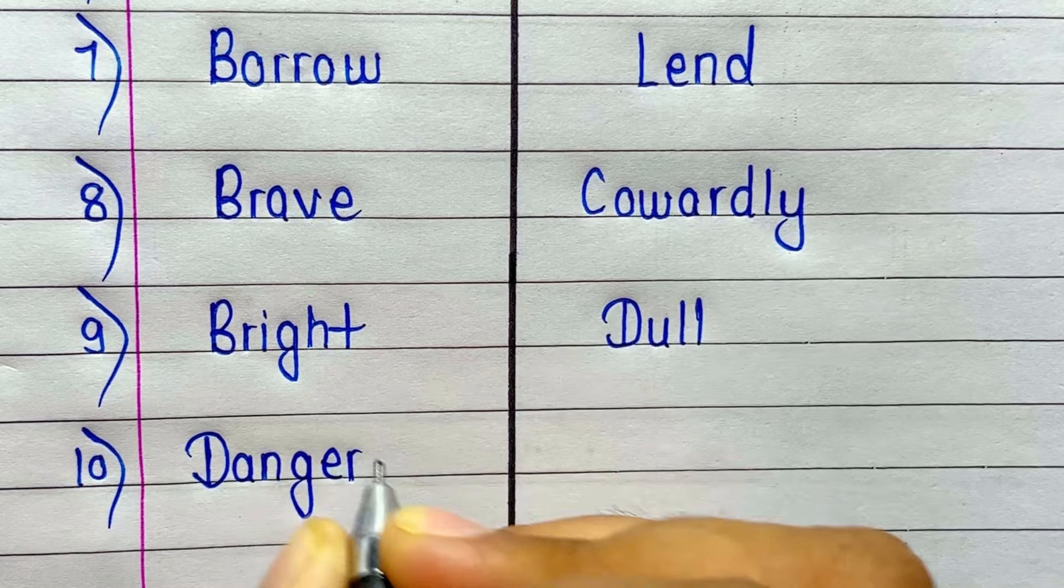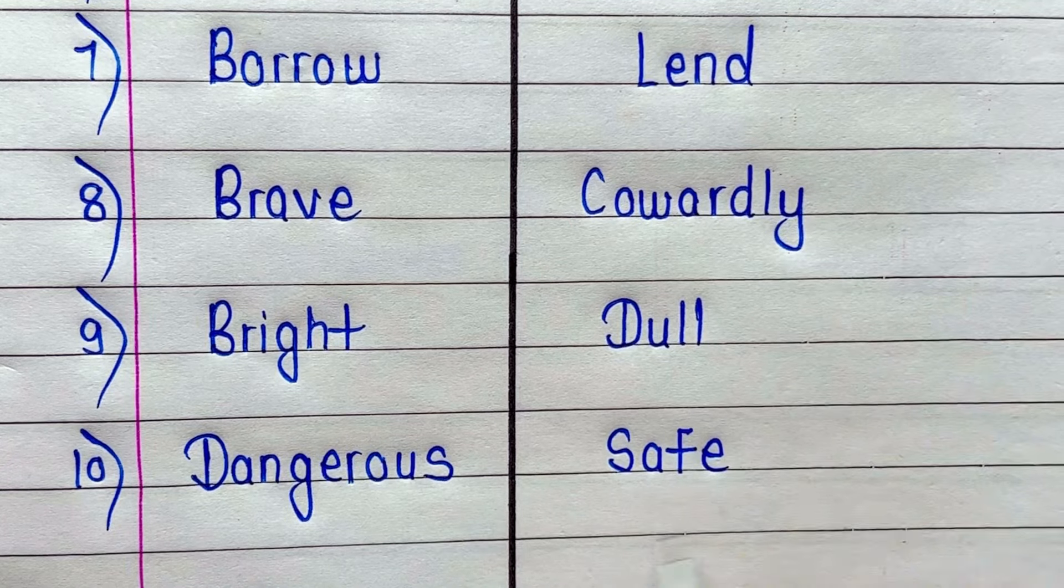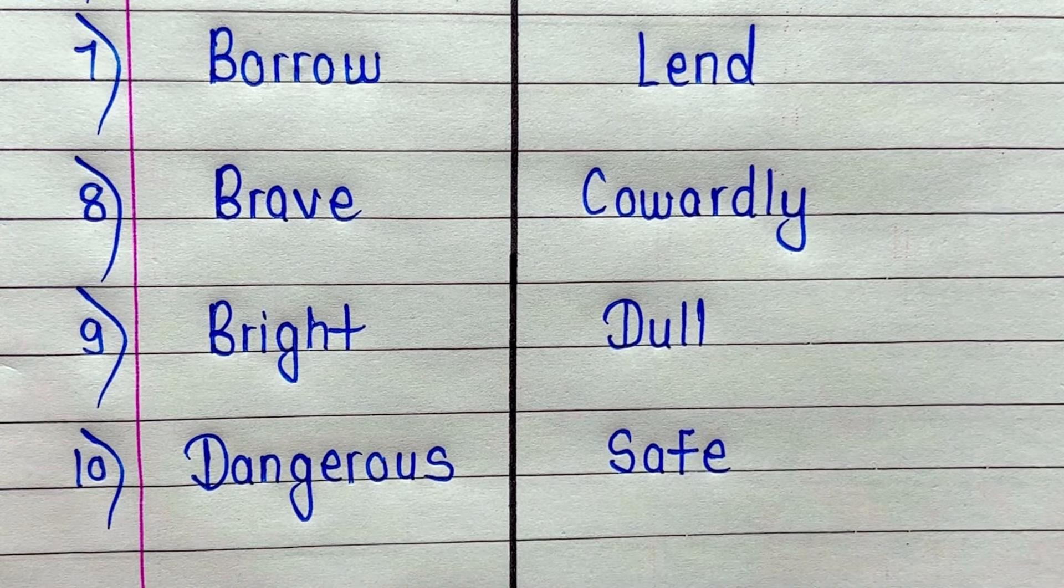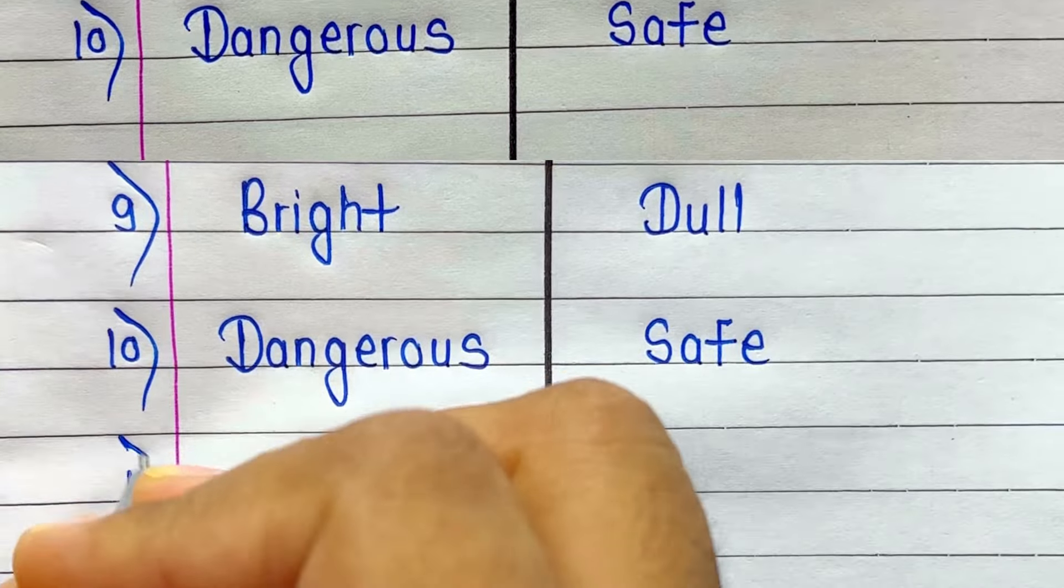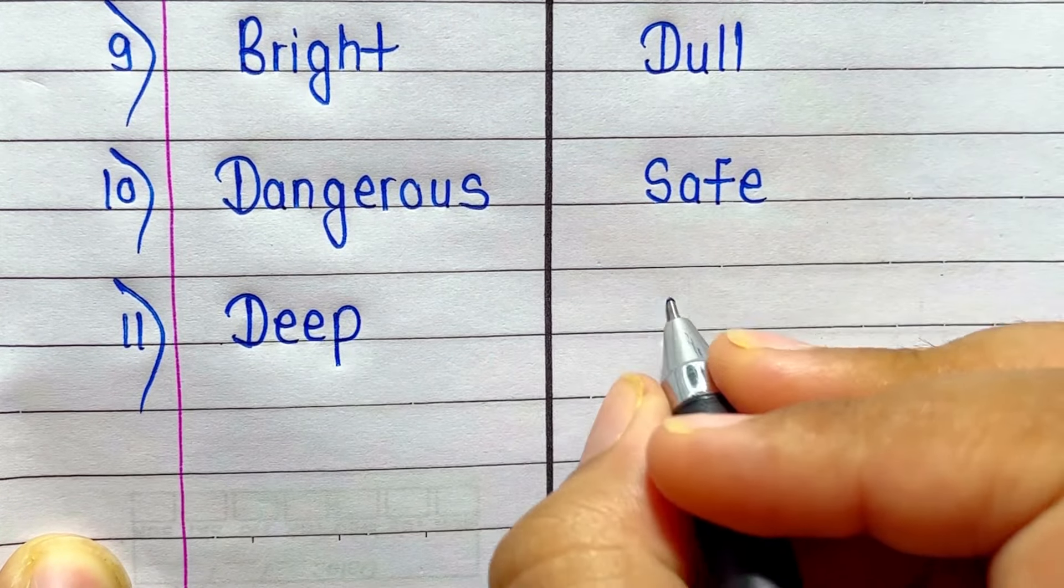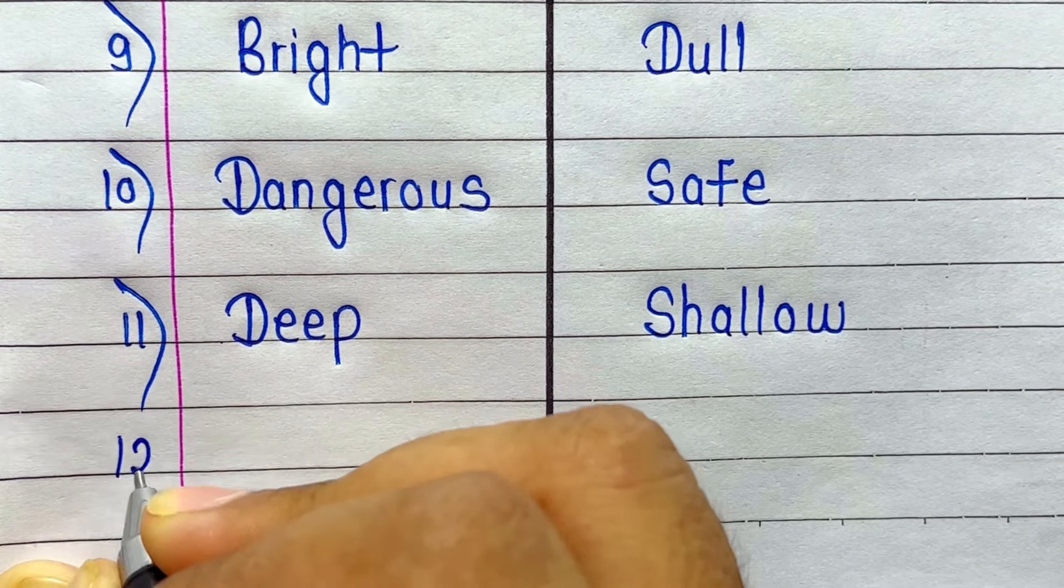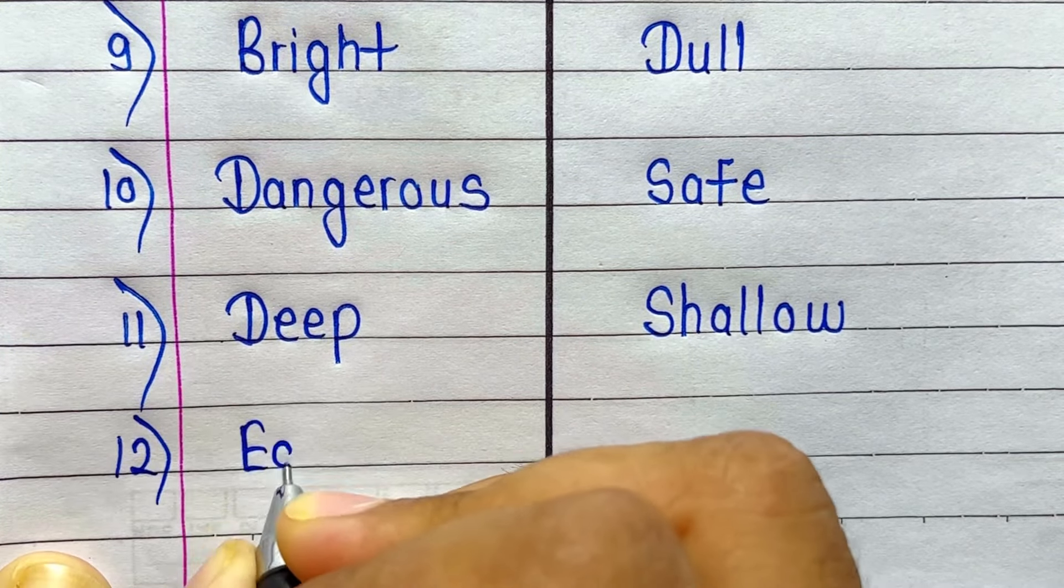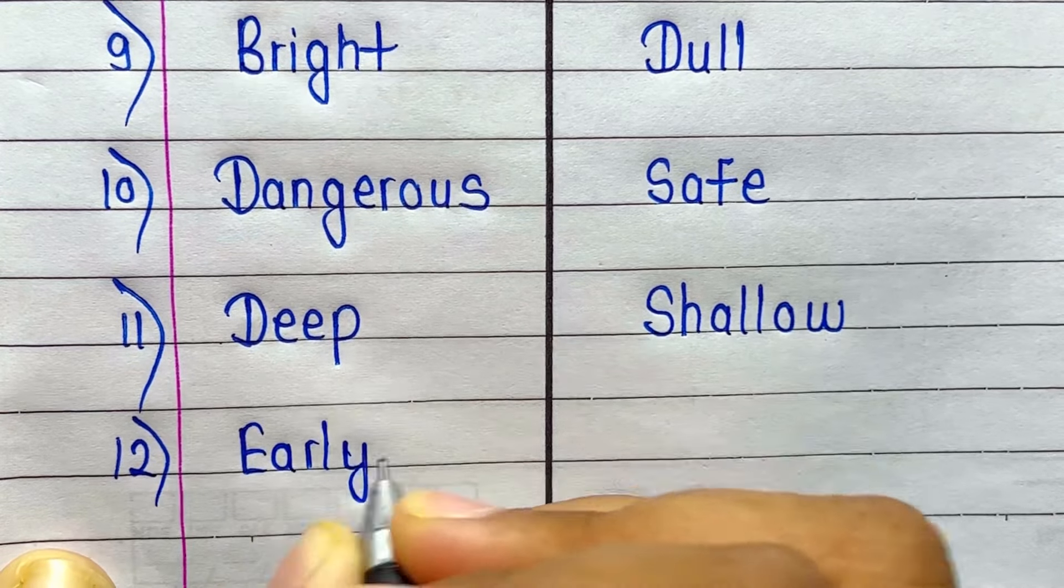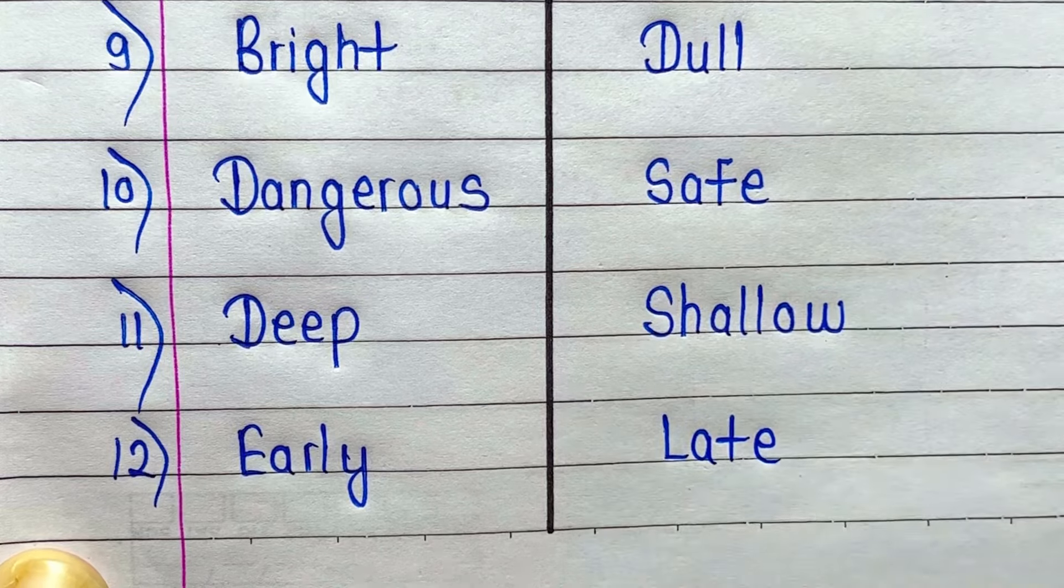Number 10 is Dangerous. Antonym of Dangerous is Safe. Number 11. Deep. Antonym of Deep is Shallow. Number 12 is Early. Antonym of Early is Late.